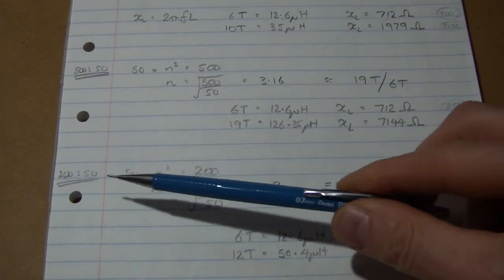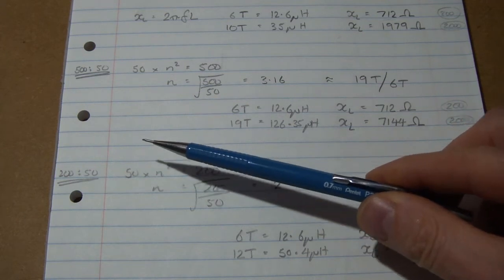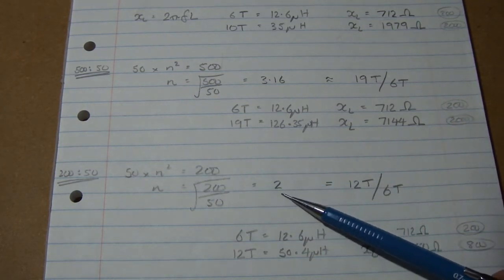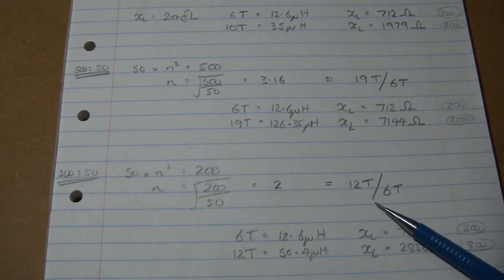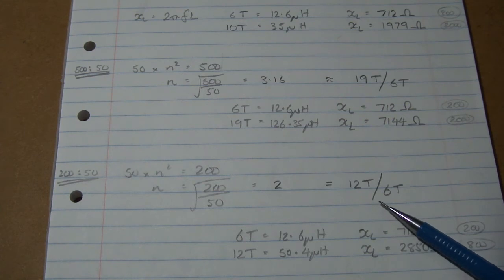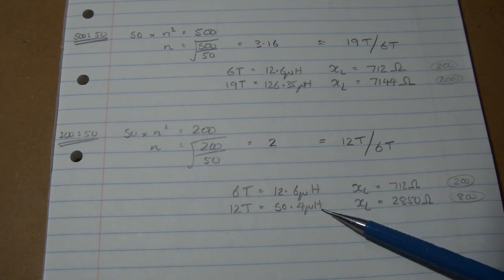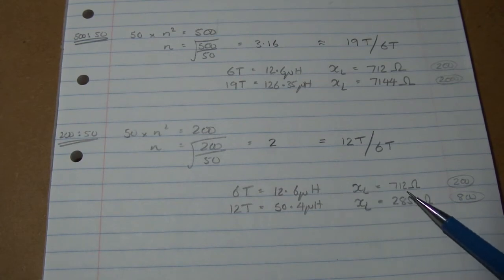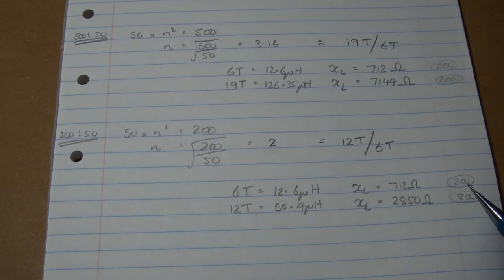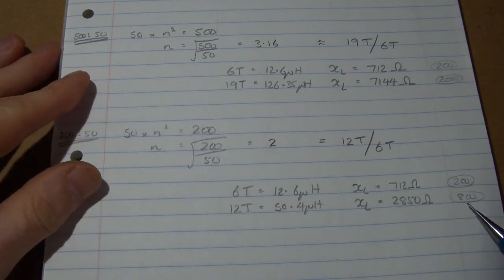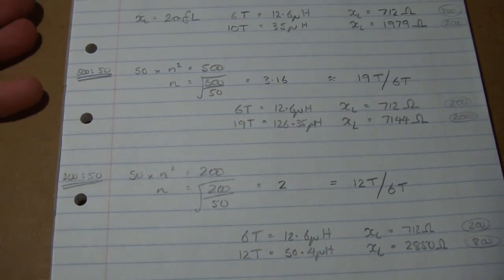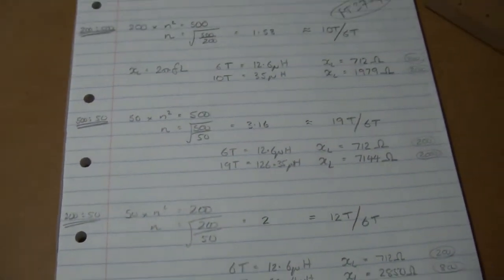The 200 back down to 50 for that last transformer gives us a turns ratio of 2, which is a nice easy one, 12 turns over 6 turns. And again, just running through, there goes our inductance which we already know, our inductive reactance, and we're well in excess. So 712 ohms when we were after 200, which is good. And then 2.8K and we were looking for 800, so that's good. So those are the ones that I actually did use in the circuit itself.